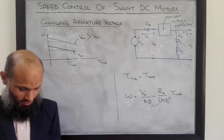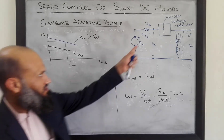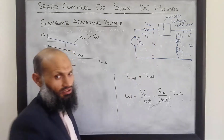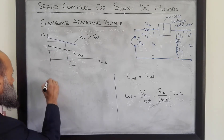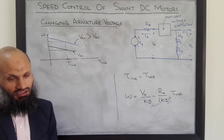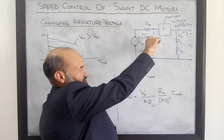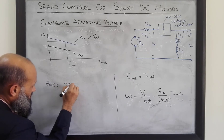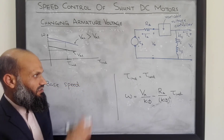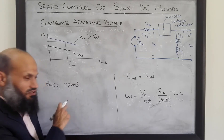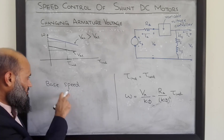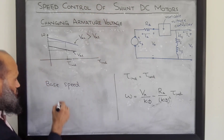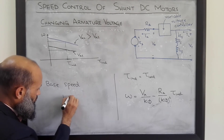A precaution with this approach: the armature windings can handle only a particular amount of voltage. If excessive voltage is applied, the insulation of the windings may get damaged. Therefore, this approach is limited by the maximum voltage that can be applied to the armature winding. Base speed is defined as the speed of the motor when rated voltage and rated load are applied, and this technique can only be used to control speed below the base speed.